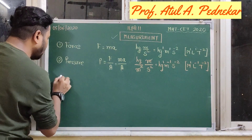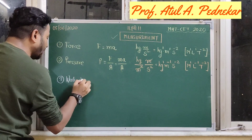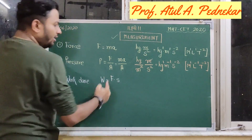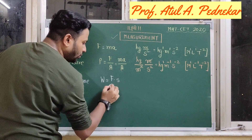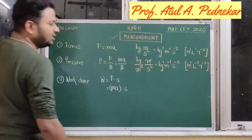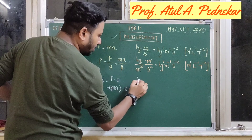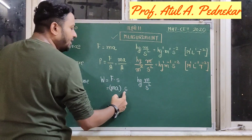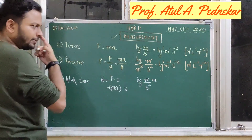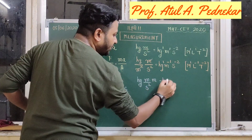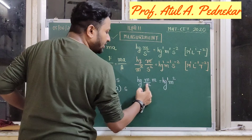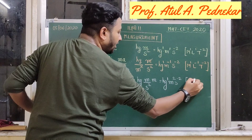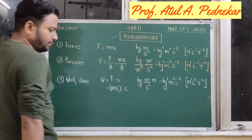The third physical quantity is work done. We know that work done W is calculated as force into displacement — that is mass into acceleration into displacement. The unit for mass is kilogram, acceleration is meter per second square, and displacement is measured in meters. So we can write kg raised to 1, meter raised to 2, second square inverse. The dimensions are M1, L2, and T to the power of minus 2.